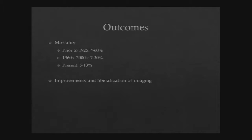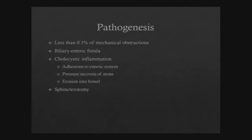To get a gallstone ileus, you have to have a biliary enteric fistula, typically. If the gallbladder gets inflamed — you usually have to have had cholecystitis prior — inflammation leads to adhesions, typically in the duodenum. A stone exerts pressure causing necrosis between the two, and the fistula tract develops. The stone ultimately falls into the bowel and lodges somewhere distal. This can also be seen after a sphincterotomy if there's a large enough defect.